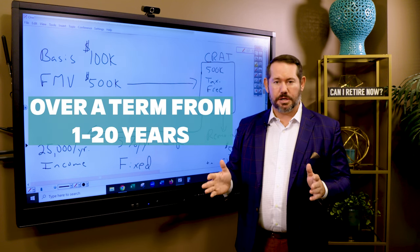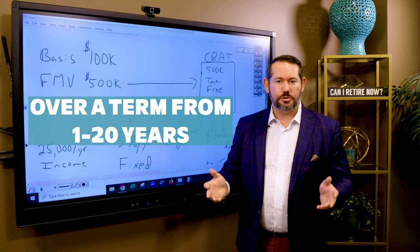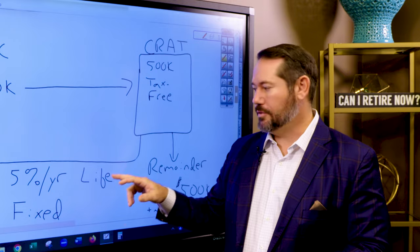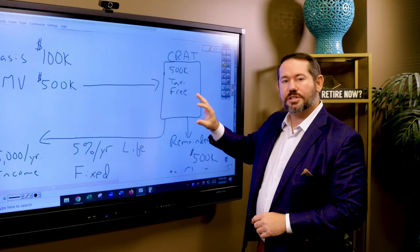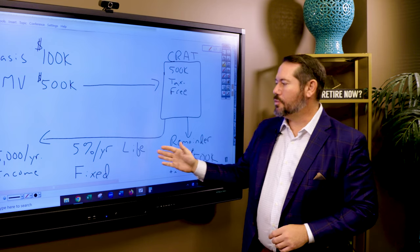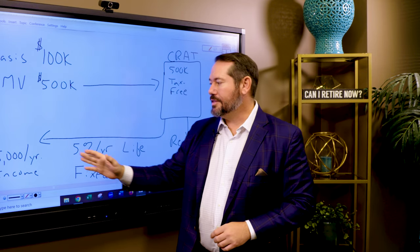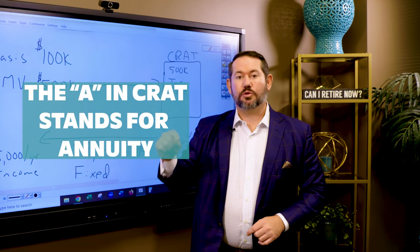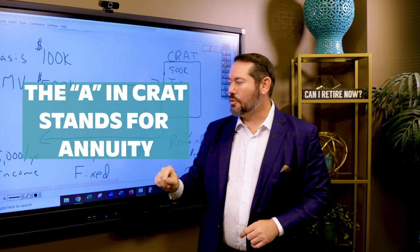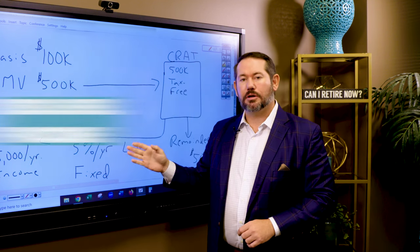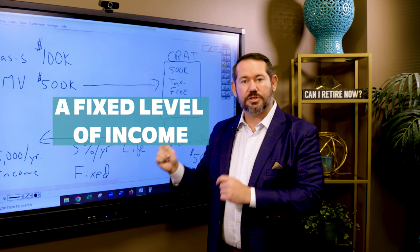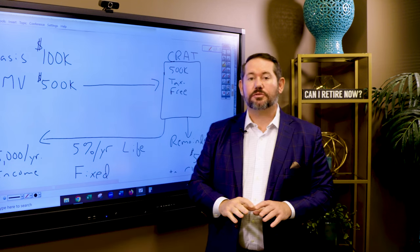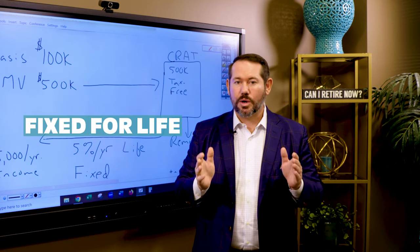For some reason you can't do 22 or 25 years — it's either one to 20 years as your term or over the course of life. So we put the $500,000 in, sell that stock tax-free, take 5% a year for life — that's $25,000 per year. The 'A' in CRAT stands for annuity: once we decide what percentage of the trust balance we're going to take as an income stream, it is fixed for life or fixed for whatever term you choose.